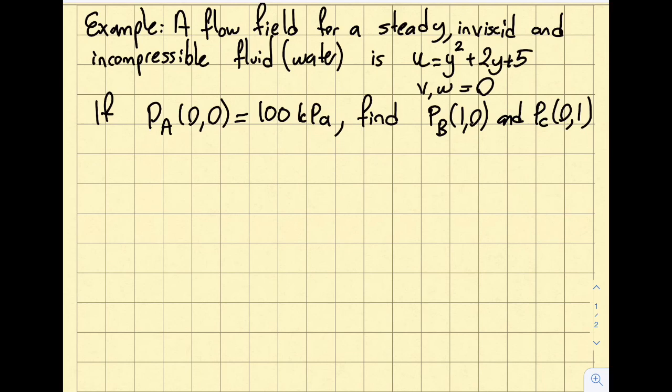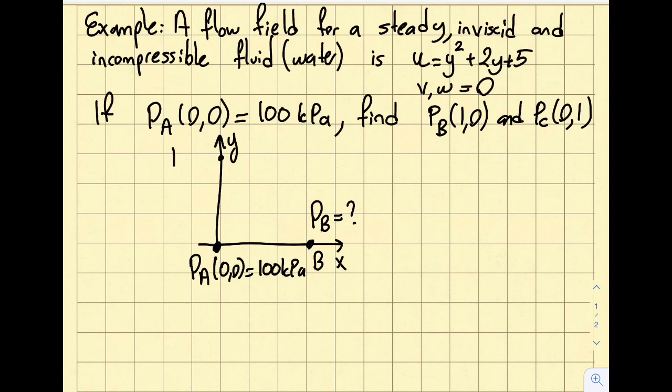Before I solve the question, I want to illustrate these points on an axis. So at the origin I call this Pa, and that value is given to me as 100 kPa. Pb is at (1,0), that's the question mark. Pc is where x is 0, y is 1.